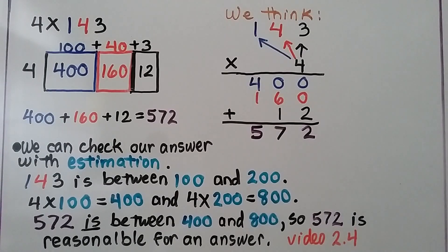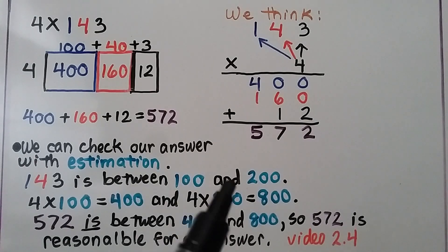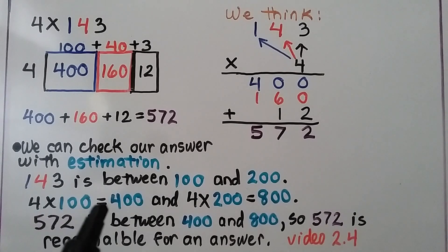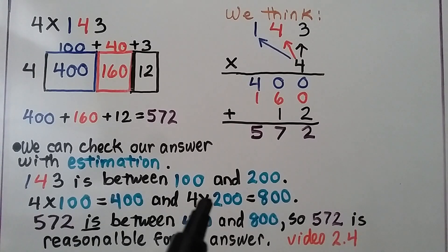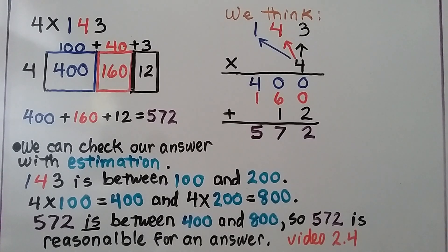We add our partial products and get 572. We can check our answer with estimation — 143 is between 100 and 200. That would be our low and high estimates. 4 times 100 is 400, and 4 times 200 is 800. And 572 is between 400 and 800, so 572 is a reasonable answer. We did that in lesson 2.4.